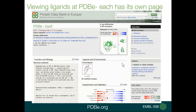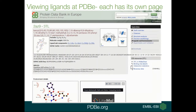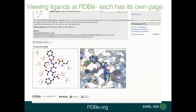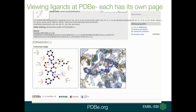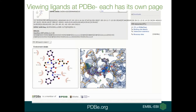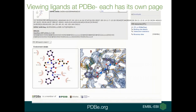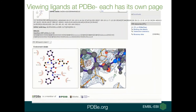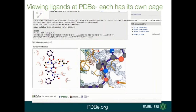Viewing ligands at PDBe: every ligand has its own page. Clicking on the ligand from the entry page takes you to a further page with information about the small molecule, a 2D diagram of the ligand binding site, and a 3D interactive viewer where you can see the molecule and the electron density for X-ray structures to judge for yourself whether it's supported by the data.